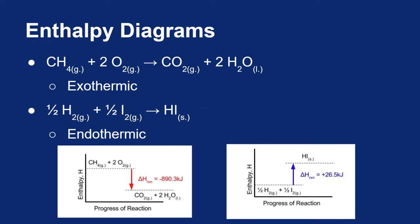Conversely, for the endothermic process, delta H is increasing—you're absorbing heat. To make one mole of solid hydrogen iodide, you must absorb 26.5 kilojoules of energy. So for the exothermic process, delta H is negative 890.3 kilojoules, and for the endothermic process, delta H is positive 26.5 kilojoules.